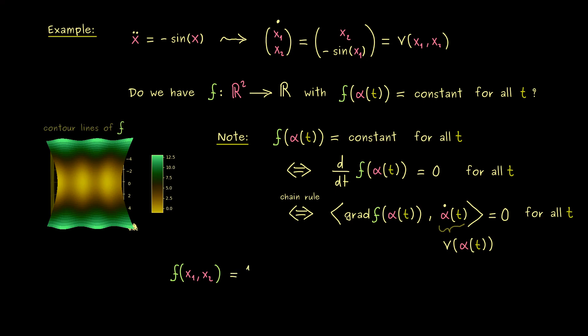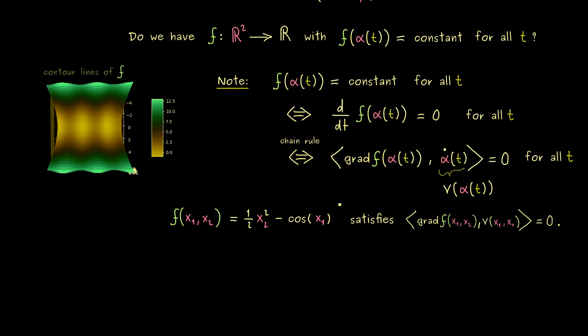So for example we could say we take one half x2 squared minus the cosine of x1. Because then the partial derivatives coincide with the things we have in v. And then we just have to fix the sign in some sense. In fact here I can already tell you we have it. Gradient of f is perpendicular to v. And because of this nice property and the calculation from before we have the nice property that f of a solution is constant. Hence this implies plotting the contour lines of the function f already gives us our phase portrait.